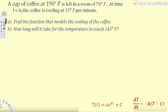This problem states that a cup of coffee at 190 degrees Fahrenheit is left in a room of 70 degrees Fahrenheit. At time t=0, the coffee is cooling at 15 degrees Fahrenheit per minute. The first question asks us to find the function that models the cooling of the coffee, and the second question asks how long it will take for the temperature to reach 143 degrees Fahrenheit.